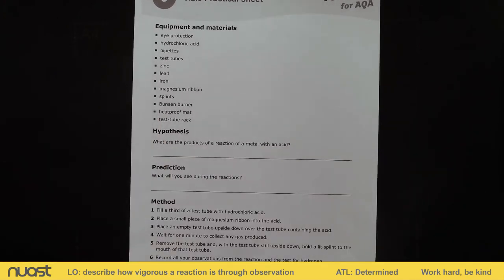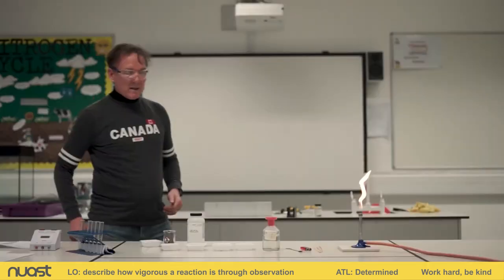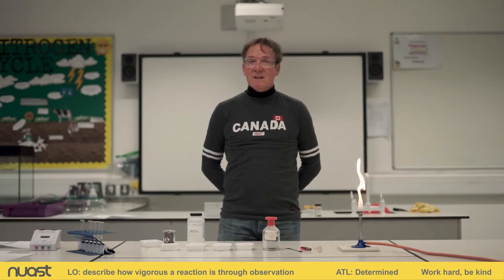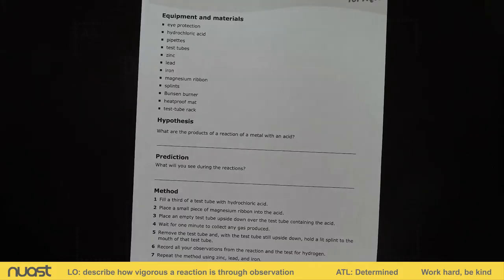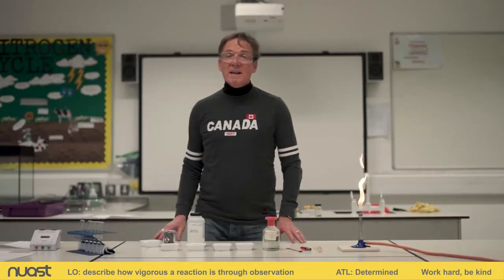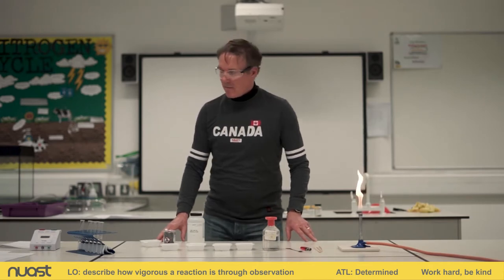I'm going to put that sheet on screen so you can see. You will need to make a results table to do this experiment. You can do that with a pencil and a ruler, whichever is easiest. I'll put an example on the screen now so you can have a look. There is an example of a results table for this experiment on the screen, and you should also be able to get this from your teacher when you come to do the experiment.